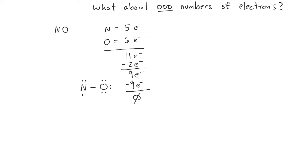Nitrogen does not have an octet, and nitrogen is not going to get an octet because we have an odd number of electrons.